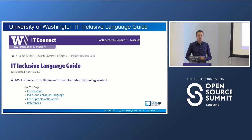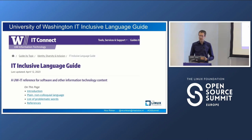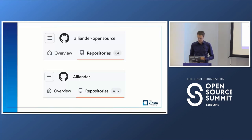Another source of expertise I found is from the University of Washington, which is a very extensive guide with many words. It starts with an introduction about writing plain, non-exclusionary language, which is a good way to explain why this is important.